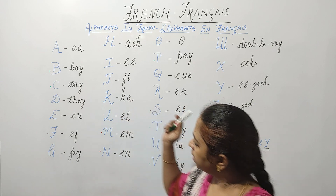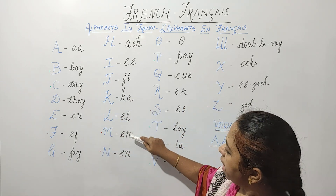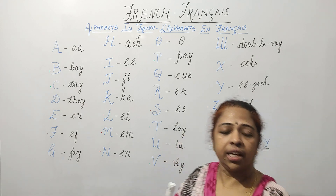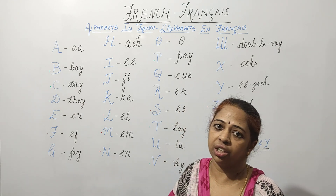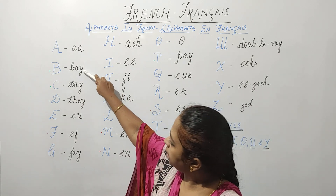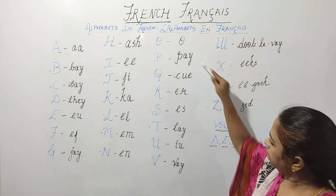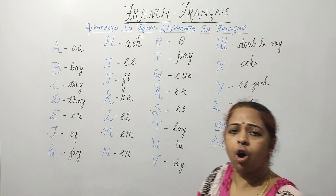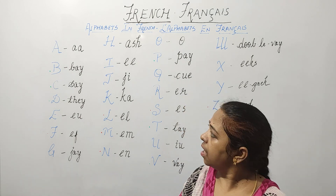Over here you will see that F, L, M, N, S, and Z are similar to the English alphabets. On the other hand, B, C, D, P, T, and V are almost similar to the English alphabets. The remaining letters are different in pronunciation.